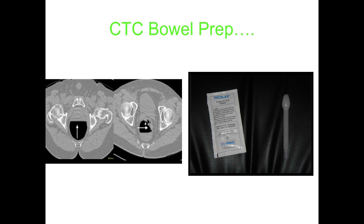Here's an example of why we need both supine and prone views. In the prone view you can see a little fluid, and the colonic wall looks clean — it's difficult to see anything there. But when you turn the patient over, you encounter a lesion — that's a tumour. You need to see both sides of the colon wall, hence you need both positions. We used to use Picolax and a rectal catheter, but now it's completely changed with an automated insufflator and gastrographin.